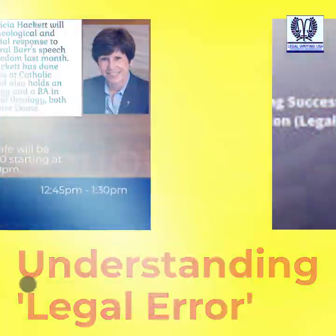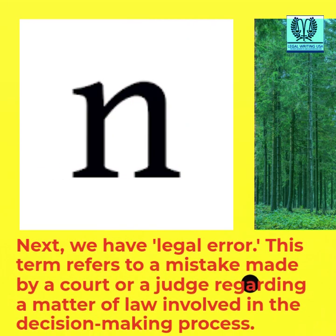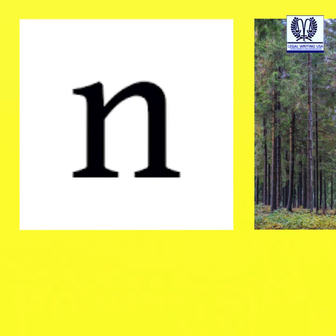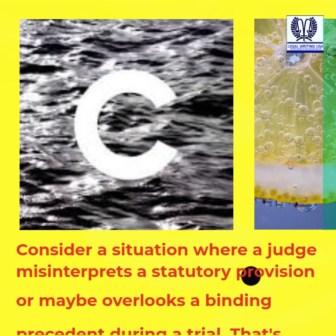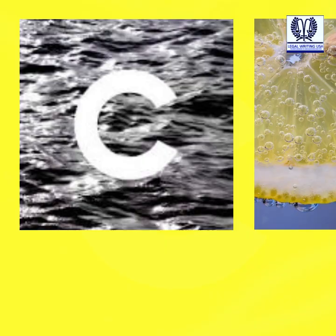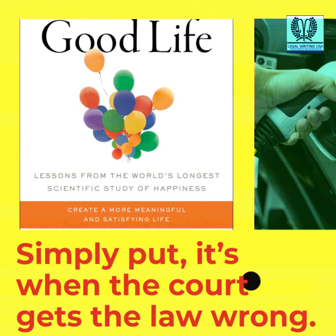Understanding Legal Error. Next, we have Legal Error. This term refers to a mistake made by a court or a judge regarding a matter of law involved in the decision-making process. Consider a situation where a judge misinterprets a statutory provision or maybe overlooks a binding precedent during a trial. That's what we'd call a Legal Error — simply put, it's when the court gets the law wrong.